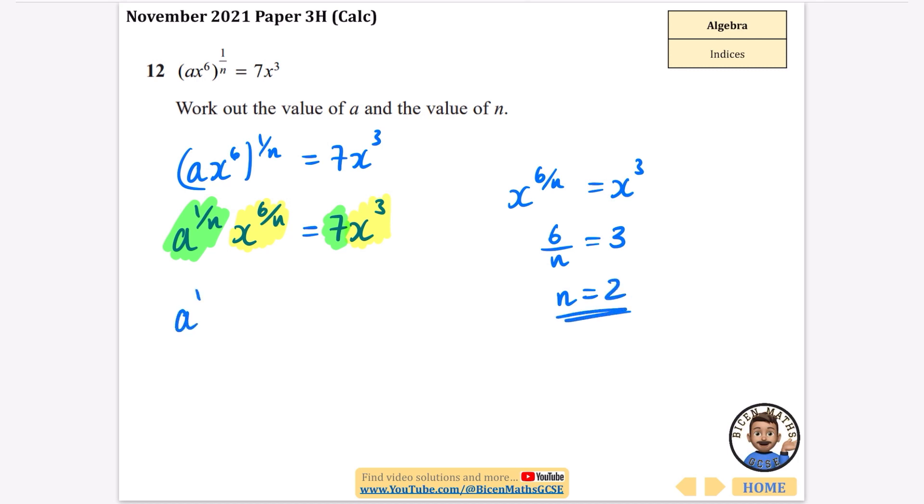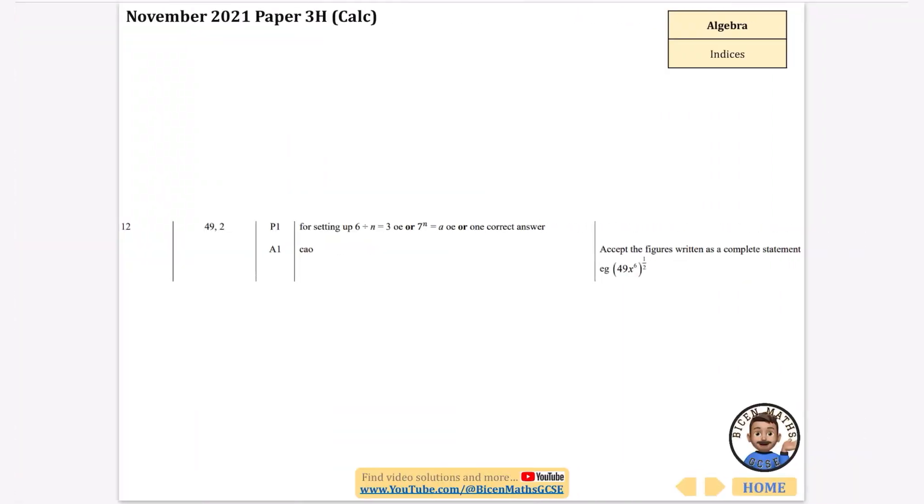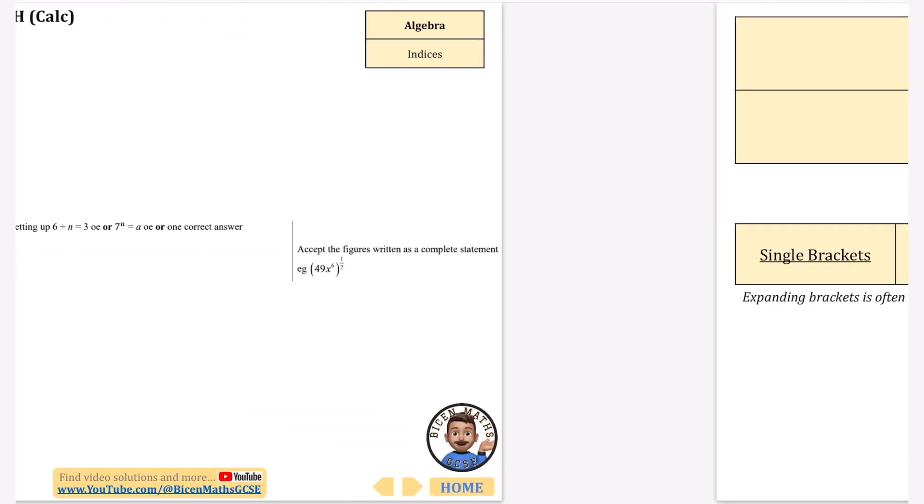Now, if n is equal to 2, I can say that a to the power of 1 over 2 is equal to 7, because we've said that n is 2, and we know that a to the power of a half is the square root of a. So all I need to do is square both sides, so a is equal to 7 squared, which is 49. So a is 49, and n is equal to 2, which are the correct answers that we've got there.